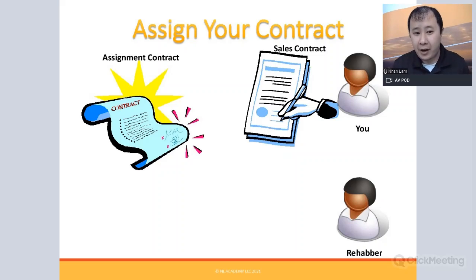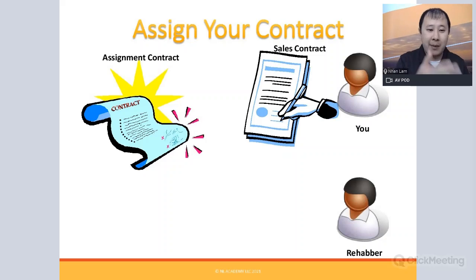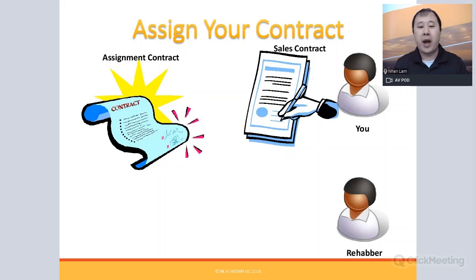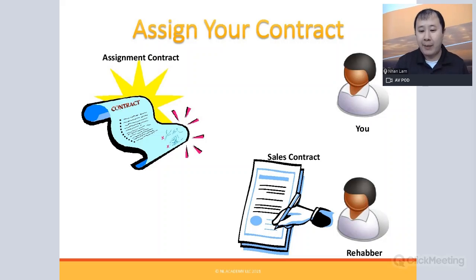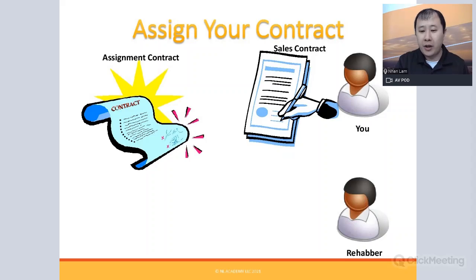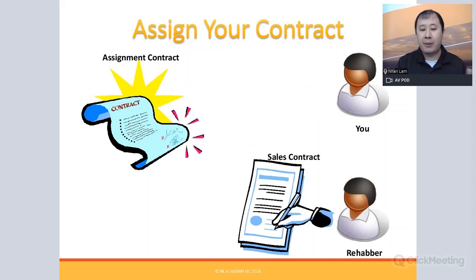Once you have a potential buyer — the rehabber — execute a separate assignment contract between you and that fix-and-flip rehabber. Once signed, the original sales contract you executed with the homeowner is assigned to the rehabber. The rehabber becomes obligated to the terms of the original contract, because it's been assigned to them.